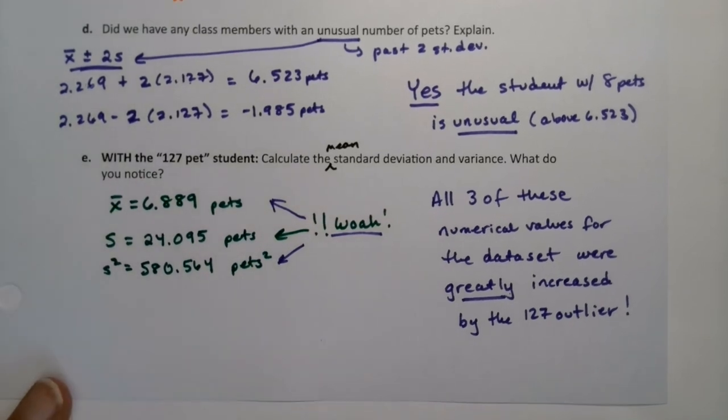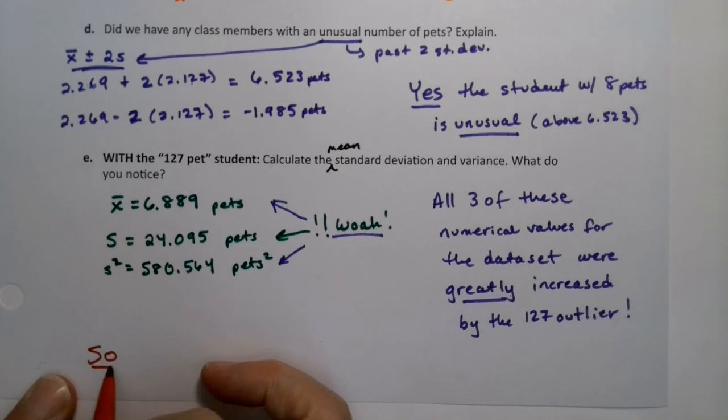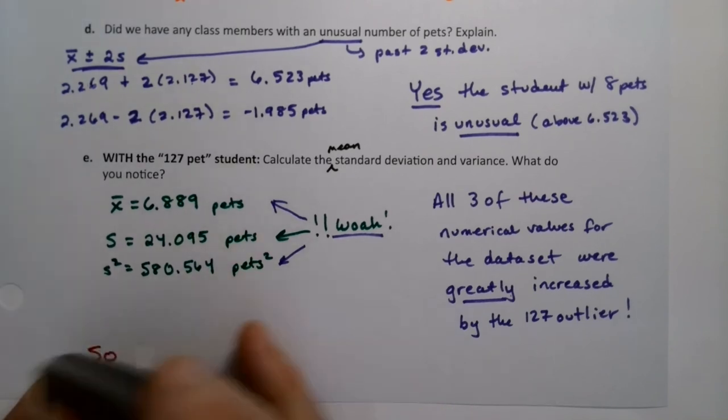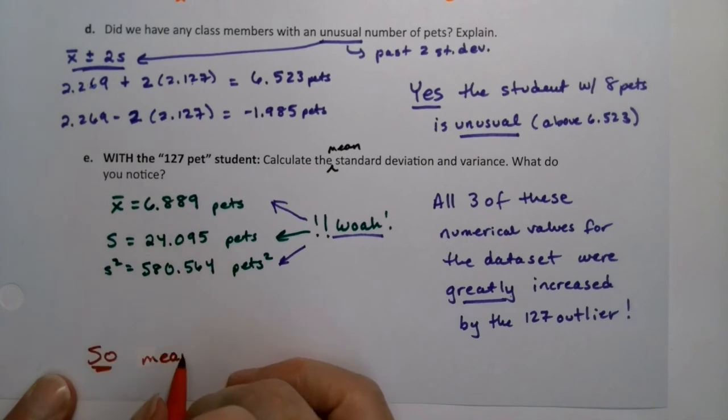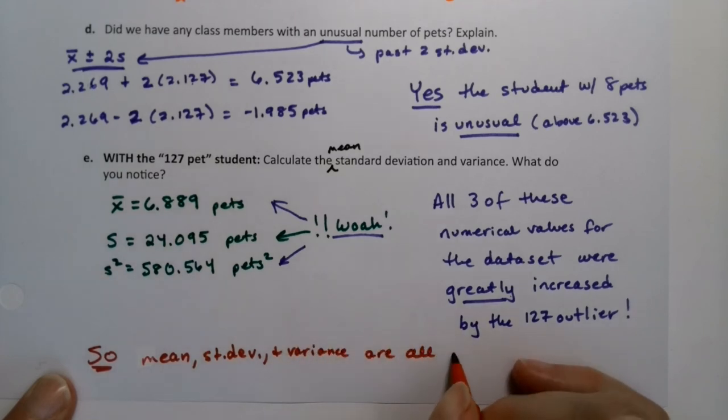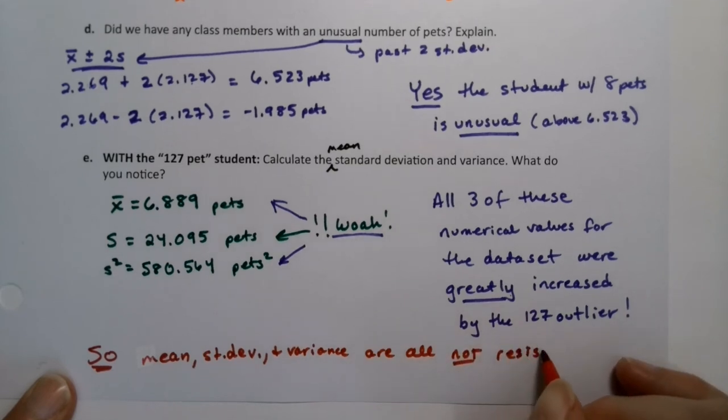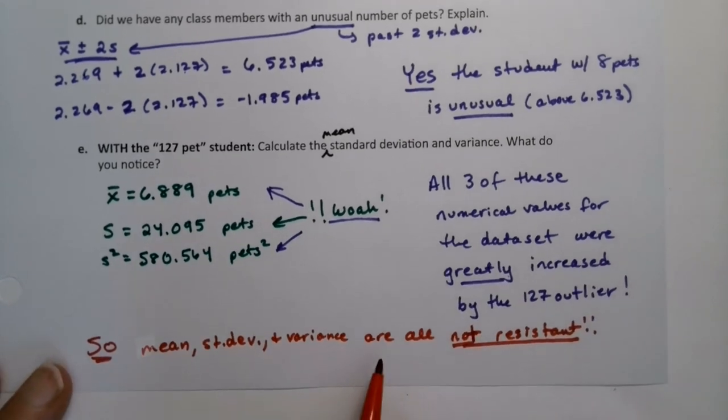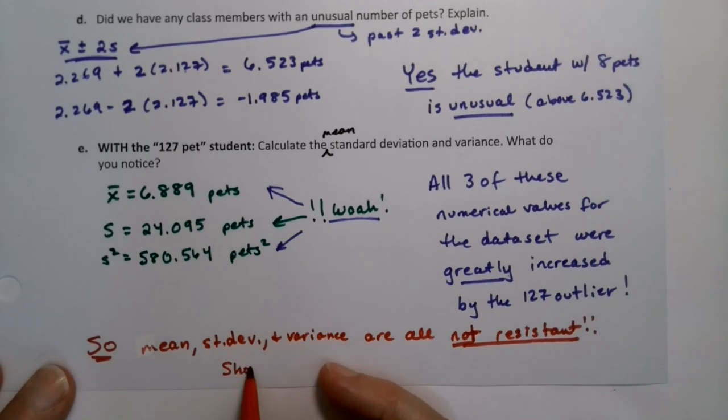The mean, standard deviation, and variance are all not resistant. Right? They don't resist the pull of that outlier, which means if you have an outlier in your data set, they're not good measures to use, should not be used with skewed data.